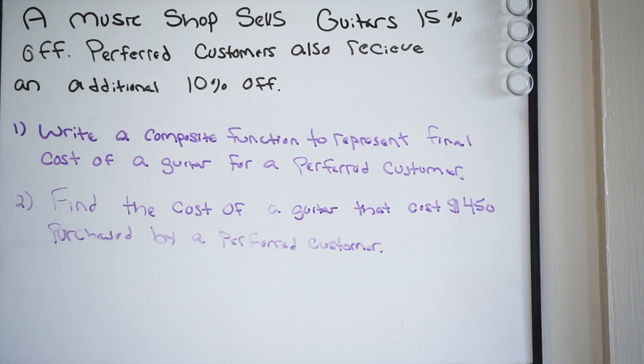Our first one is going to be for the regular customer who gets 15% off. So what we're going to say here is for our regular, let's do this in a different color. So the cost of our regular customer, so we'll say R, meaning our regular customer, and the cost, so R of C.